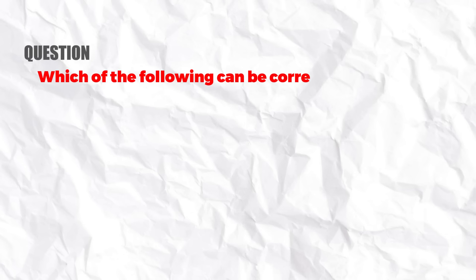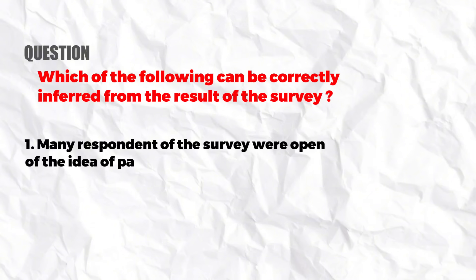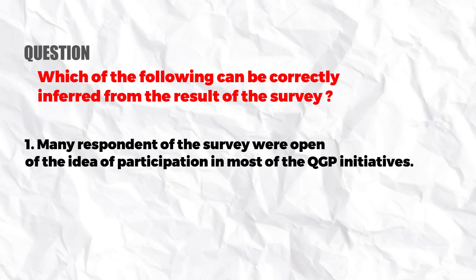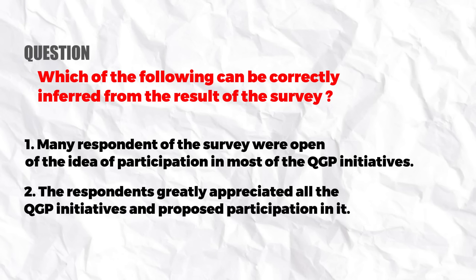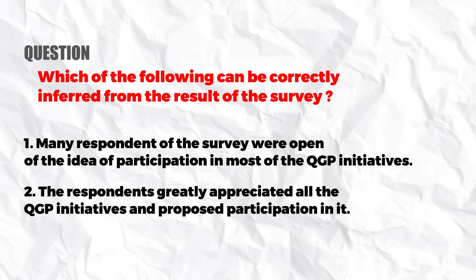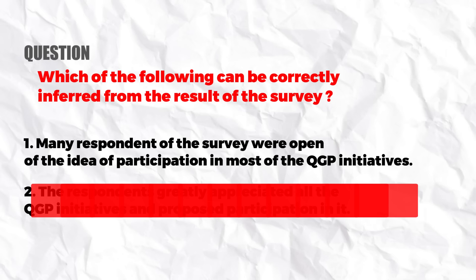Suppose the question is: which of the following can be correctly inferred from the results of the survey? Option one was: many respondents were open to the idea of participation in most of the QGP initiatives. Option two was: the respondents greatly appreciated all the QGP initiatives and proposed participation. The passage context was that if majority of QGP initiatives are accepted, the proposal will be passed — and it was. So we know they agreed for most initiatives. However, option two says all the QGP initiatives were accepted, which may not be true. That extreme word 'all' makes that option incorrect.